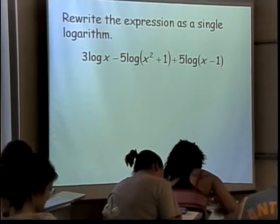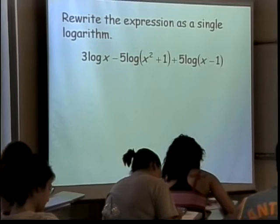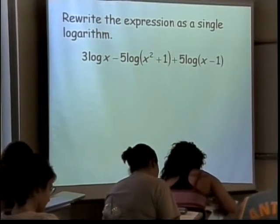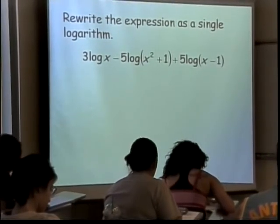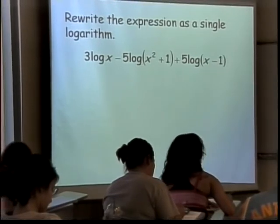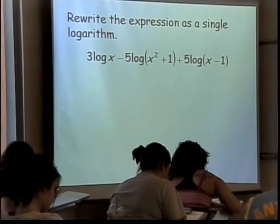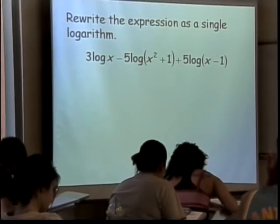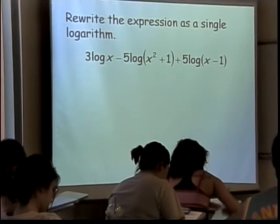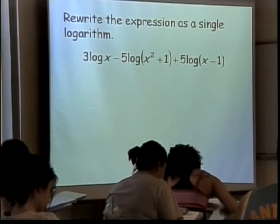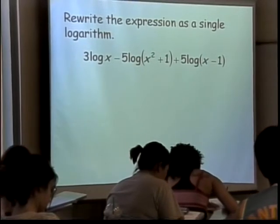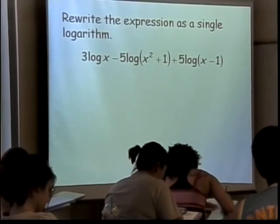Now, just like with our expanding, in expanding the rules allow us to go from 1 to 2, not from 1 to a whole bunch. In condensing, the rules allow us to go from 2 to 1. And then we can take that 1 and put it together with another 1 and make that a single logarithm until we get rid of all our logarithms.